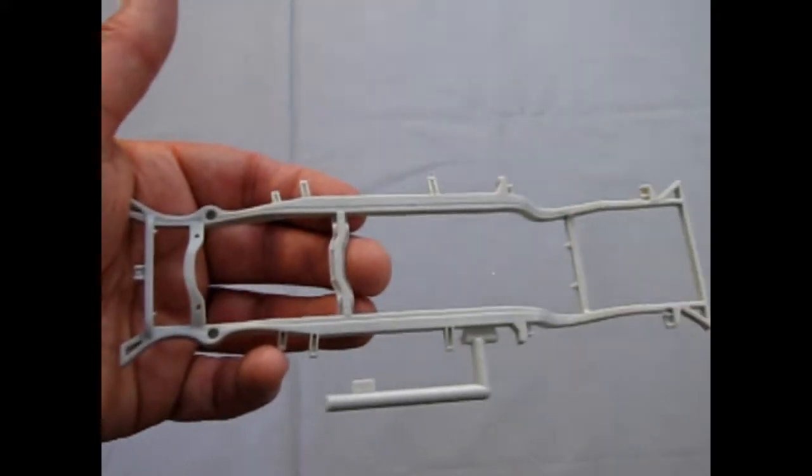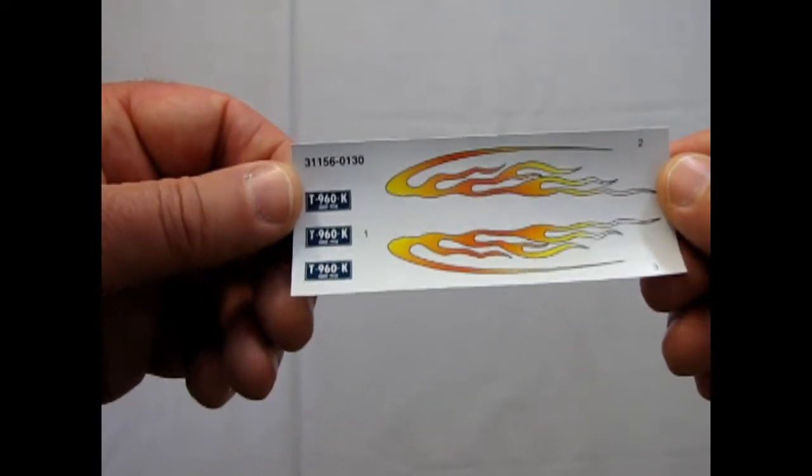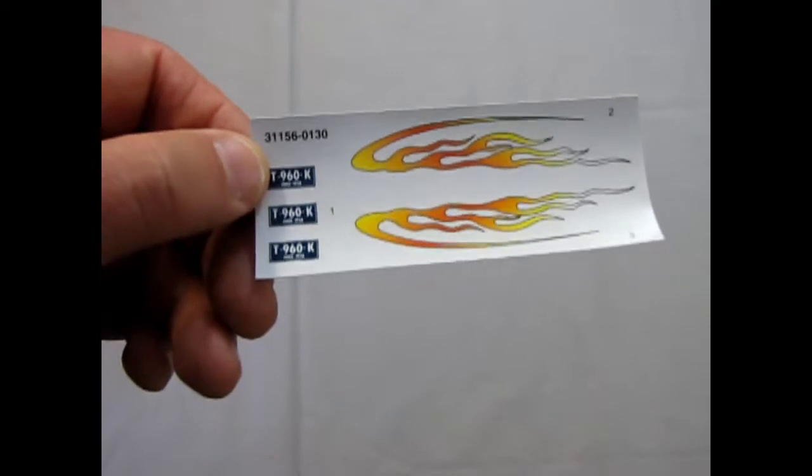And then there's your frame. Nice separate detail. I have some flame decals here with T960K Ohio license plates. They actually give you three of those in case you mess them up. So, something else there.